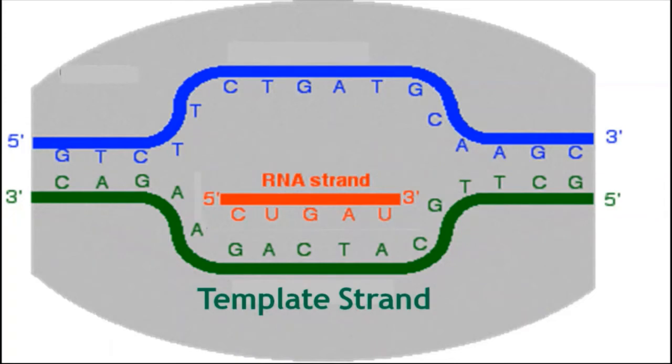It is in 3' to 5' polarity. The opposite DNA strand has the same sequence as that of the mRNA. Since codons are present in mRNA, the DNA strand having the same sequence of mRNA is called the coding strand.